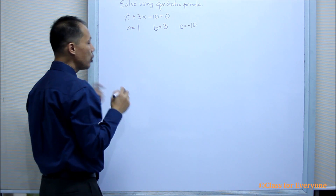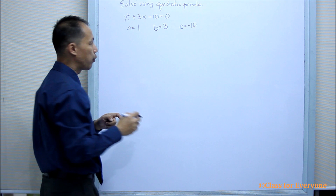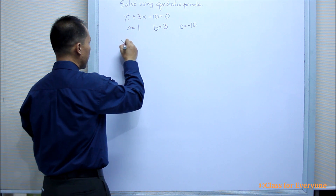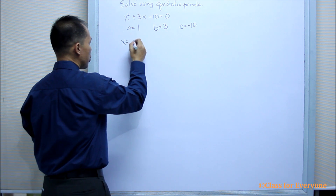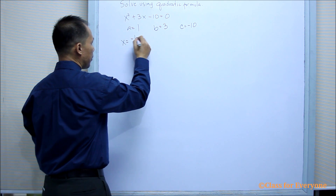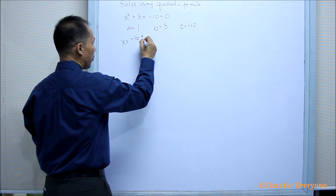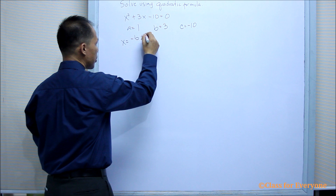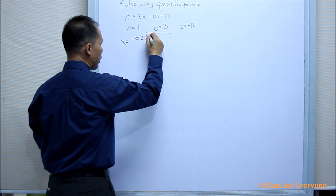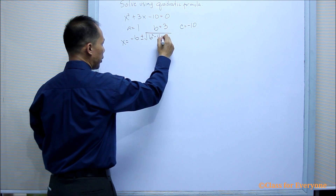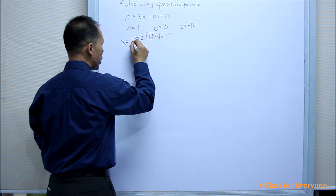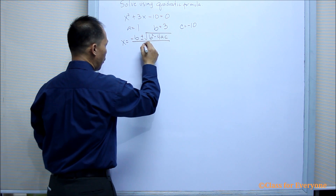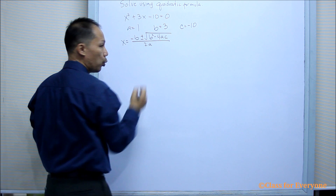When using the quadratic formula, x is equal to negative b plus or minus the square root of b squared minus 4ac, all over 2a.